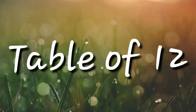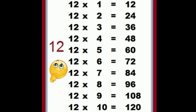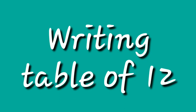Let us move on to our next table — the table of 12. 12 ones are 12, 12 twos are 24, 12 threes are 36, 12 fours are 48, 12 fives are 60, 12 sixes are 72, 12 sevens are 84, 12 eights are 96, 12 nines are 108, and 12 tens are 120. Up to 10 or 11, you can easily write or learn the tables. But sometimes we find it difficult with 12 and beyond. So let us talk about the trick.